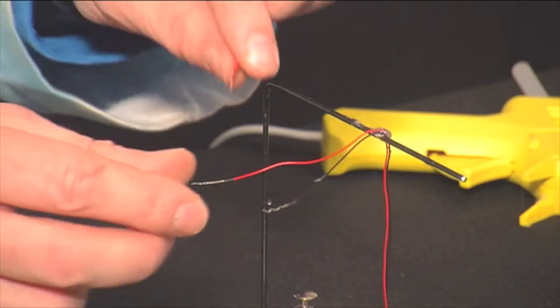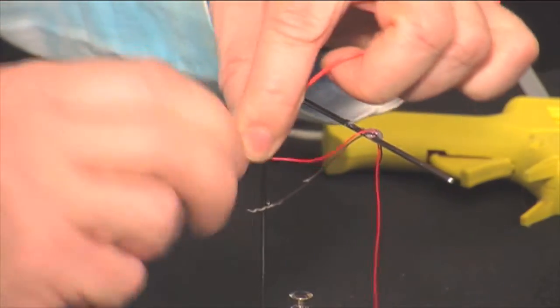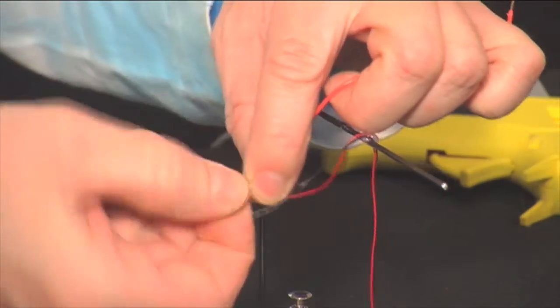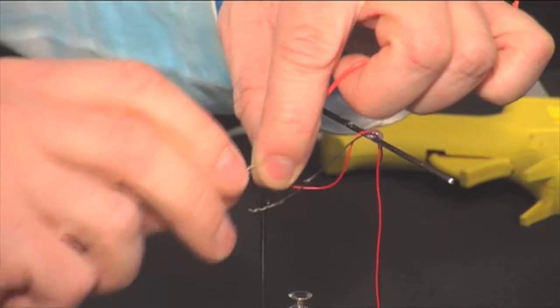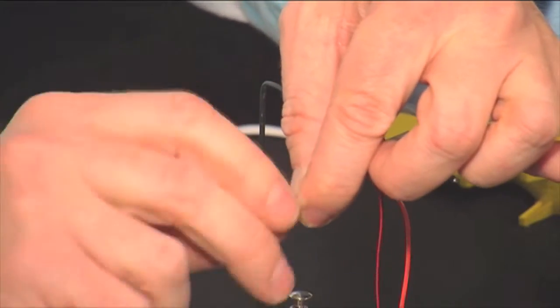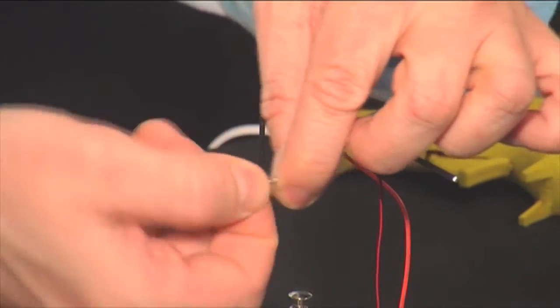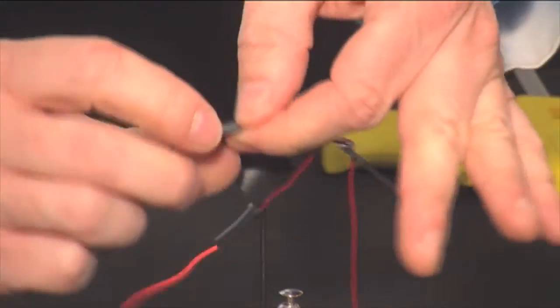Begin by twisting the wire from the motor onto one of the wires that you just removed the plastic from. Then do the same with the black wire. Use some electrical tape to hold those in place so that you know they won't come unraveled.